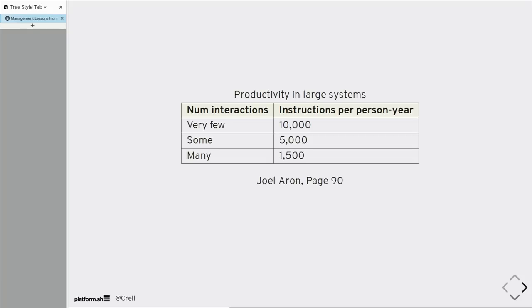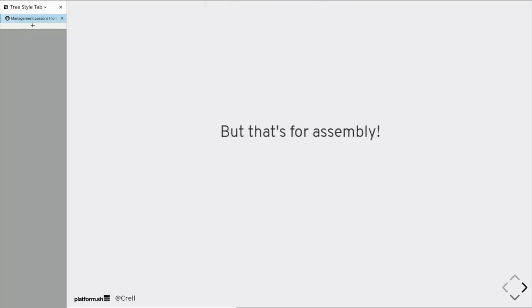Another study found that productivity in large systems varied depending on the number of interactions, both people and within the code base. The difference between very few interactions and a lot of interactions is almost an order of magnitude. In just a system that size, you have nearly a tenfold difference in productivity based on the number of interactions you have. Someone will probably point out that that study was done on assembly. However, no one writes in assembly anymore.